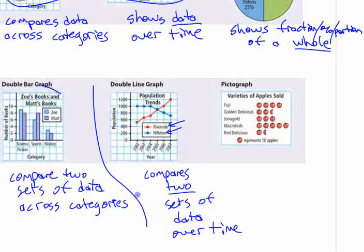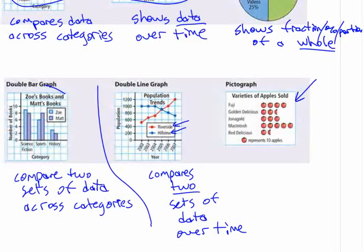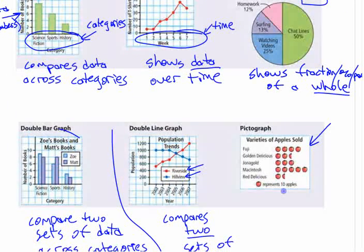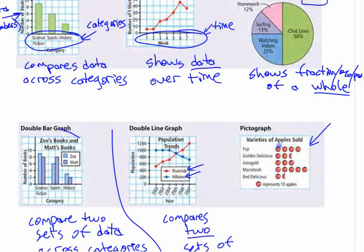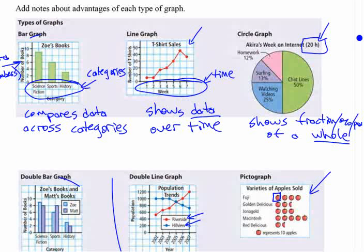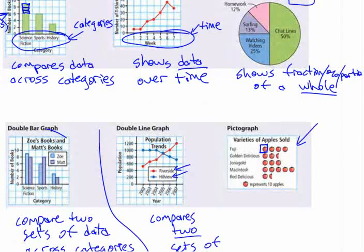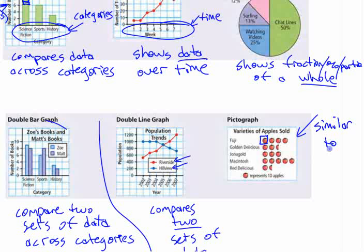The last one is a pictograph. What does that show? It's actually pretty similar to another one, even though it doesn't look like it. It's sort of like a bar graph, only with symbols. In kindergarten, this is probably the first type of graph you would do — one symbol represents one thing. Now you're far more sophisticated, and you can see that a bar is meant to represent nine. But in kindergarten, you would draw one individual little block for each thing. So it's similar to a bar graph — shows data over categories.